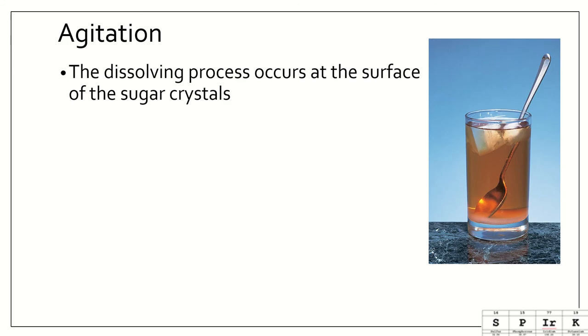We're going to first talk about agitation. The dissolving process occurs at the surface of the sugar crystals. So think of just maybe a cube of a sugar crystal. The edges, the surface, is where it dissolves. Think about like a gobstopper. When you eat a gobstopper or a jawbreaker, it doesn't dissolve from the inside out, right? You slowly wear it away from the outside and then it gets smaller and smaller and smaller. So the dissolving process, which is what you're doing when you're eating a gobstopper, occurs at the surface.